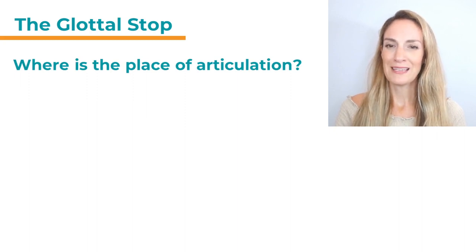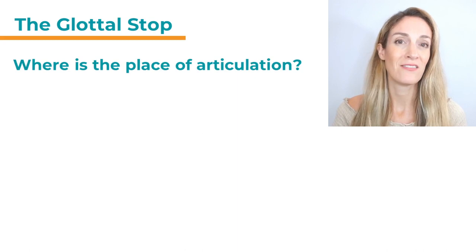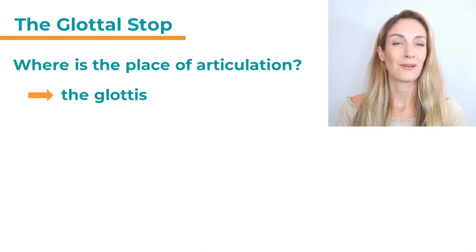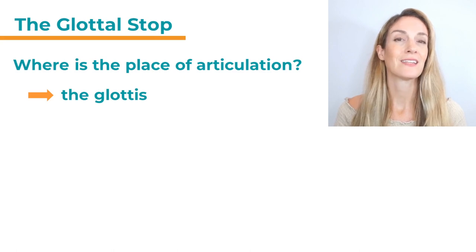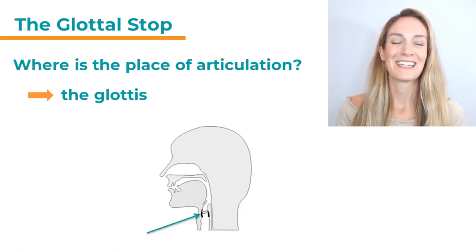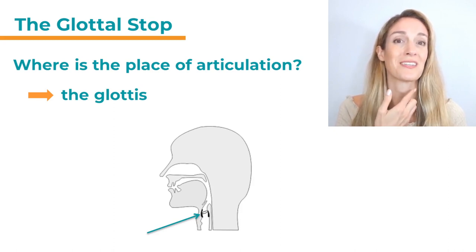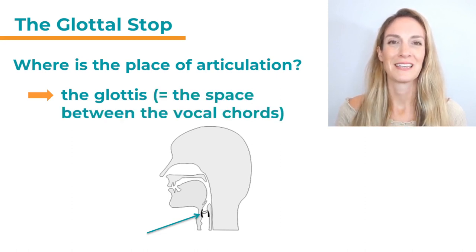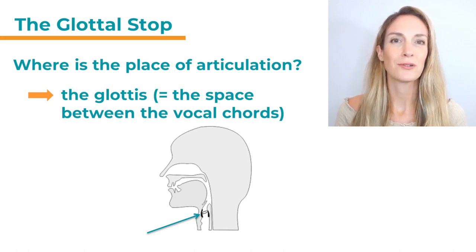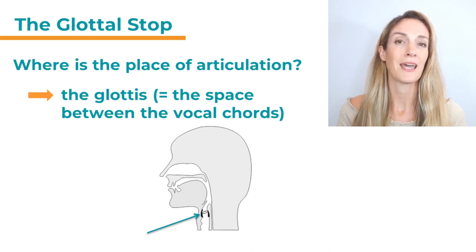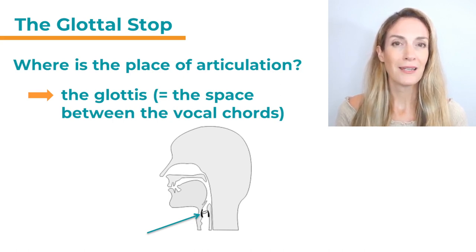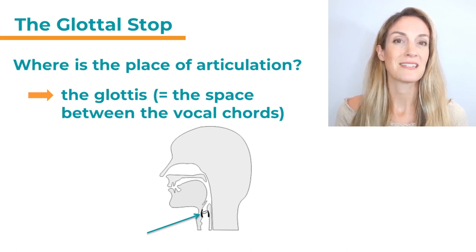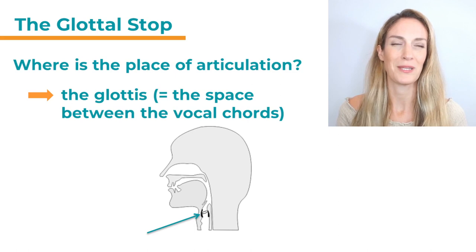So where is the place of articulation? That is really very special with the glottal stop — it's very different to all the other sounds we have in English. The glottal stop is produced in the glottis, which is exactly where your vocal cords are situated in your body, somewhere down here on your throat. In the diagram you can see those two little vocal cords. In the glottal stop, the space between the two vocal cords stays open — so the glottis is really that space between the two vocal cords.